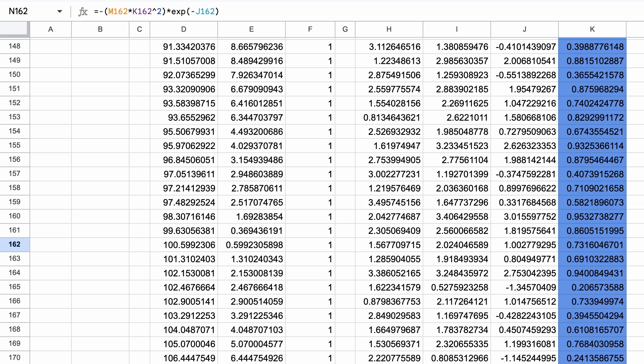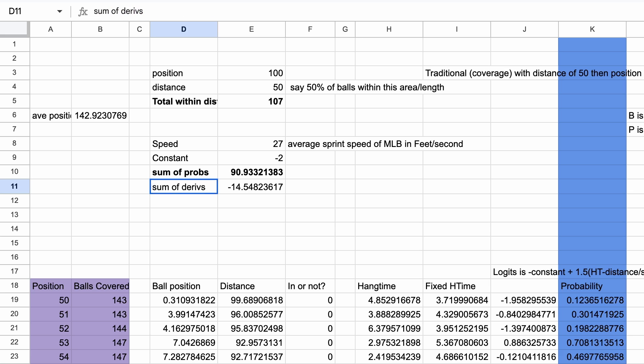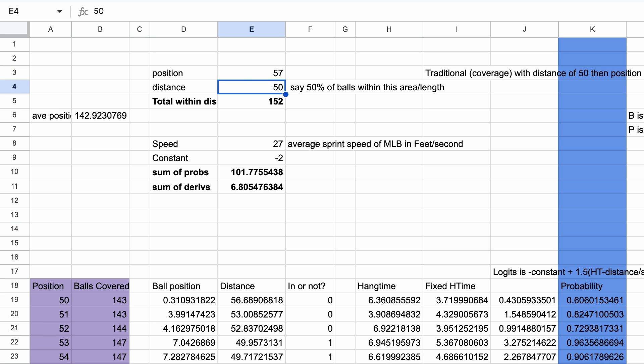So how do we use these values? Well, if we sum them up, we will know which way we will increase the average probability. When the fielder is at position 57, the sum of the derivatives is about 6.8. That's positive. That means that a small increase in position will raise the average probability, so we want to increase the position.